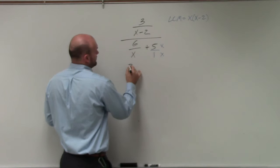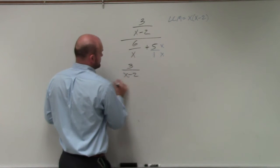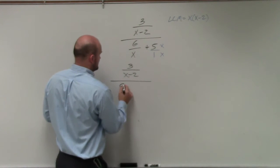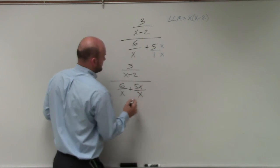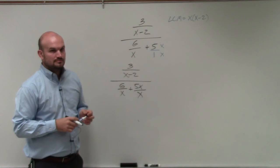So therefore, I obtain 3 over x minus 2 in my numerator. And then 6 over x plus 5x over x.